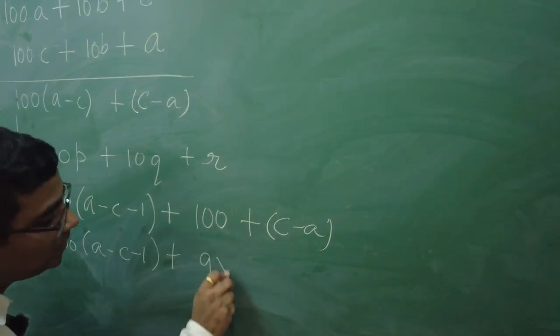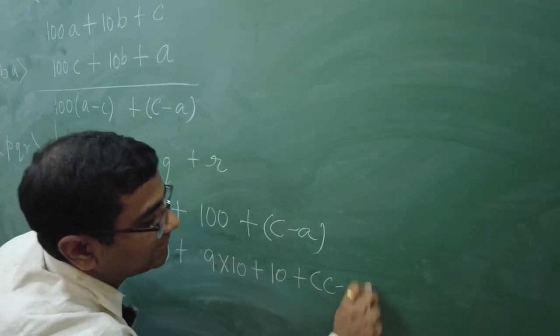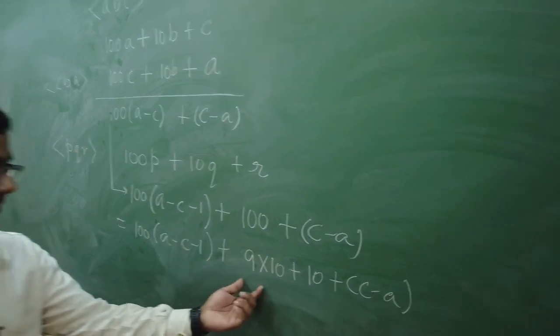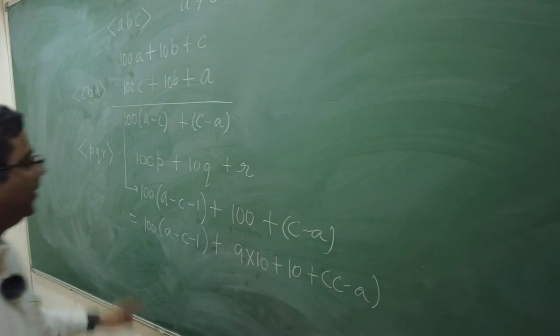So, I have purposefully broken down this 100 as, 9 times 10 plus 10. Why? Because, somewhere I want this 10 times some digit. Now, I am getting 1.